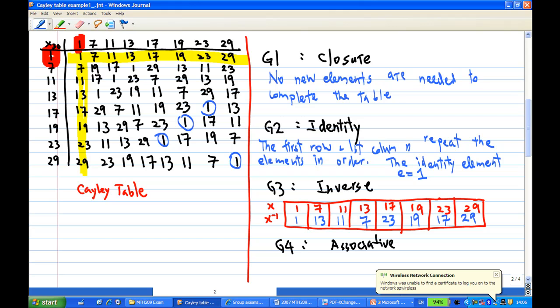Now the fourth axiom means the operation must be associative. We know that the multiplication is associative, so therefore this is satisfied. The multiplication is general multiplication, so all four axioms are satisfied, therefore the group G with multiplication modulo 30 is a group.